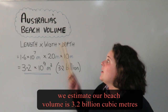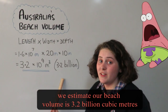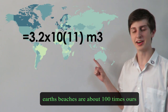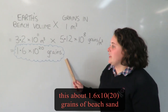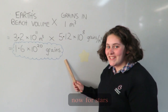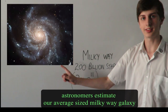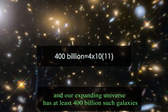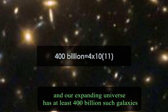We estimate our beach volume to be 3.2 billion cubic meters. Earth's beaches are about a hundred times ours, giving about 1.6 by 10 to the 20th grains of beach sand. Now for stars — astronomers estimate that our average-size Milky Way galaxy has 200 billion stars, and our expanding universe has at least 400 billion such galaxies.